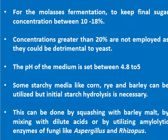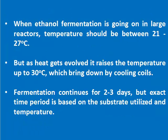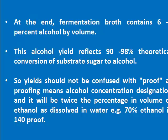The pH of the medium is set between 4.8 to 5. Some starchy media like corn, rye, and barley can be utilized, but initial starch hydrolysis is necessary. This can be done by mashing with barley malt, by mixing with dilute acids, or by utilizing amylolytic enzymes of fungi like Aspergillus and Rhizopus. In large reactors, temperature should be kept between 21 to 27°C, but as heat evolves it raises the temperature up to 30°C, which is brought down by cooling coils. Fermentation continues for 2 to 3 days. At the end, fermentation broth contains 6 to 9% alcohol by volume, reflecting 90 to 98% theoretical conversion of substrate sugar to alcohol.